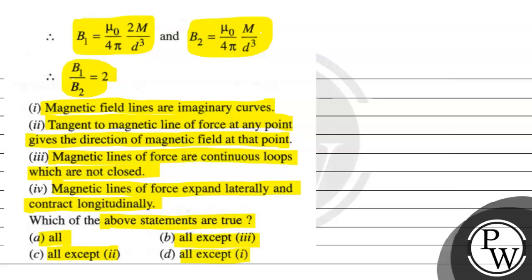So, the concept we are going to apply here is basically magnetic field lines. Now, you see this passage accordingly. We have to read the first statement. If you read the first statement, the first statement is true. Second statement, that's true. The tangent to magnetic field lines at a particular point defines what? The direction of magnetic field.